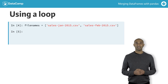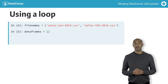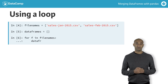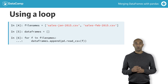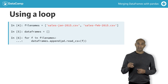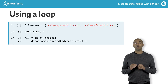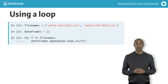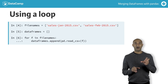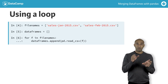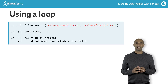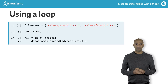We then initialize an empty list called data frames and iterate through the list of file names. Within each iteration, we invoke read_csv to read a data frame from a file, and we append the resulting data frame to the list data frames.